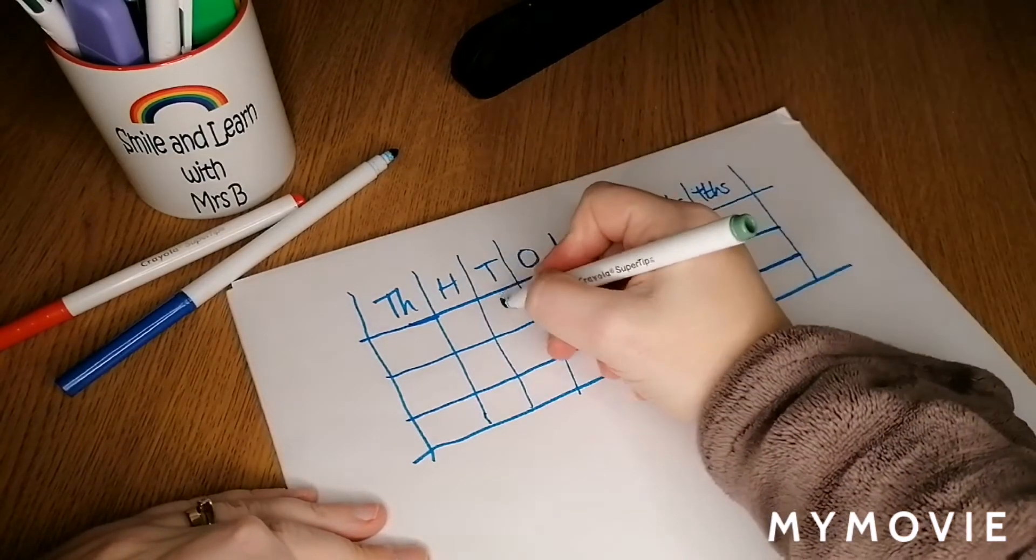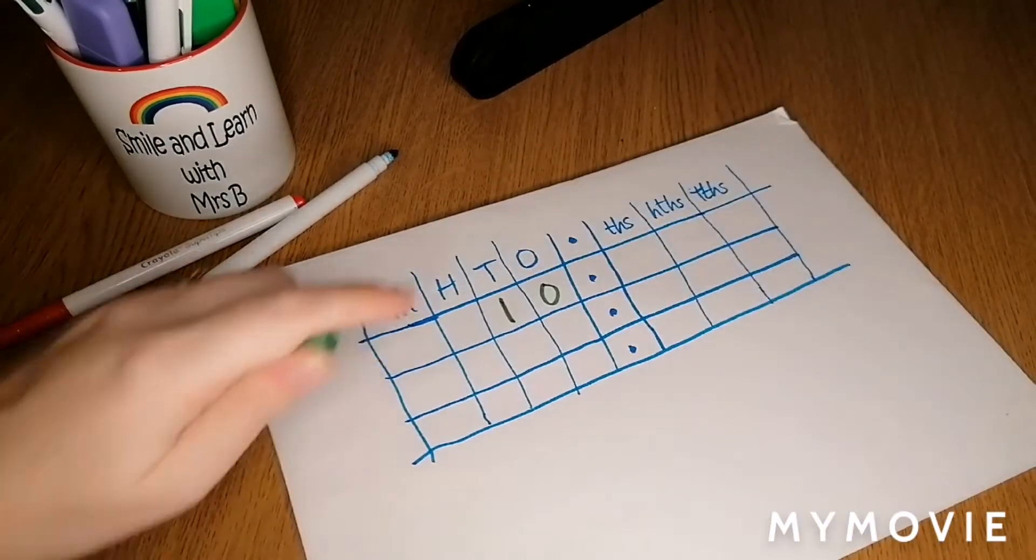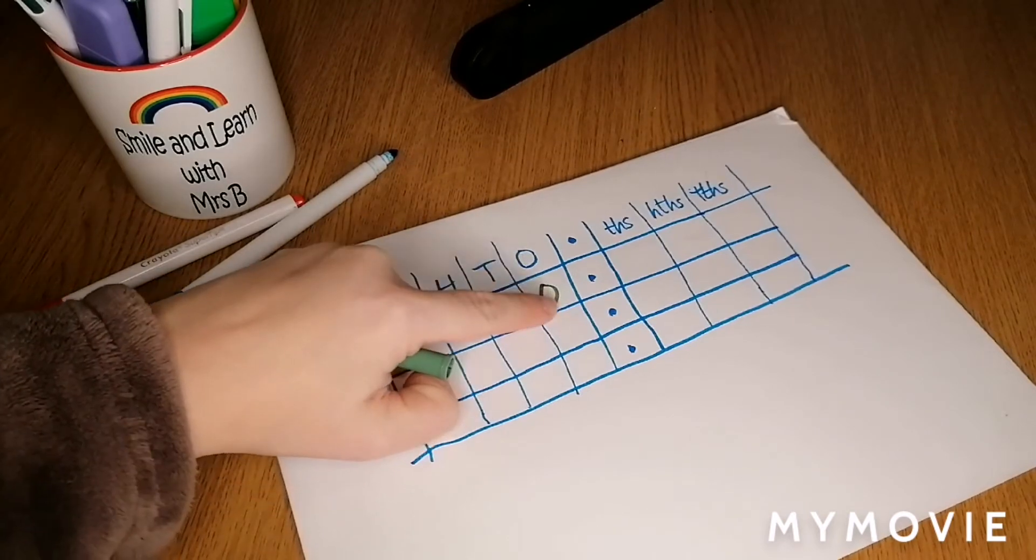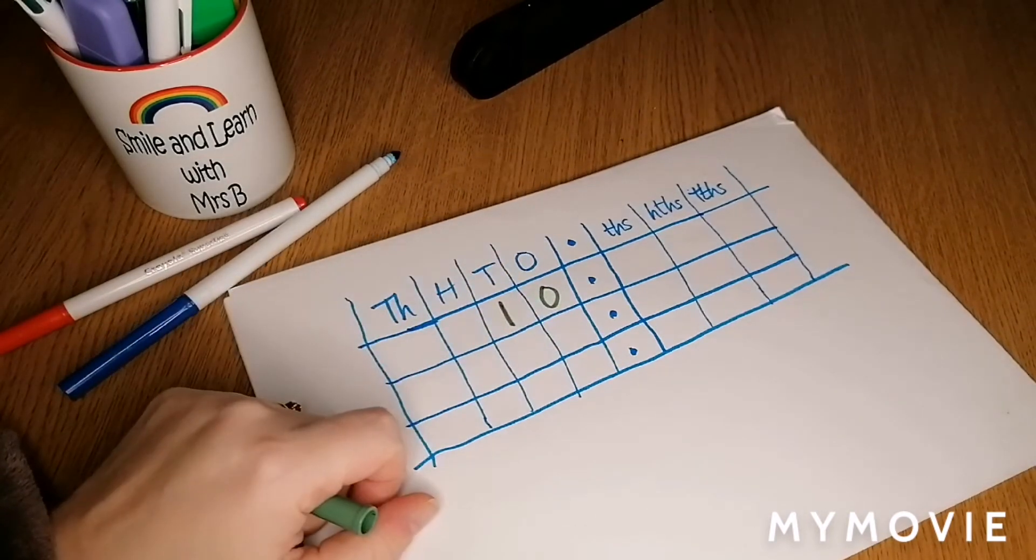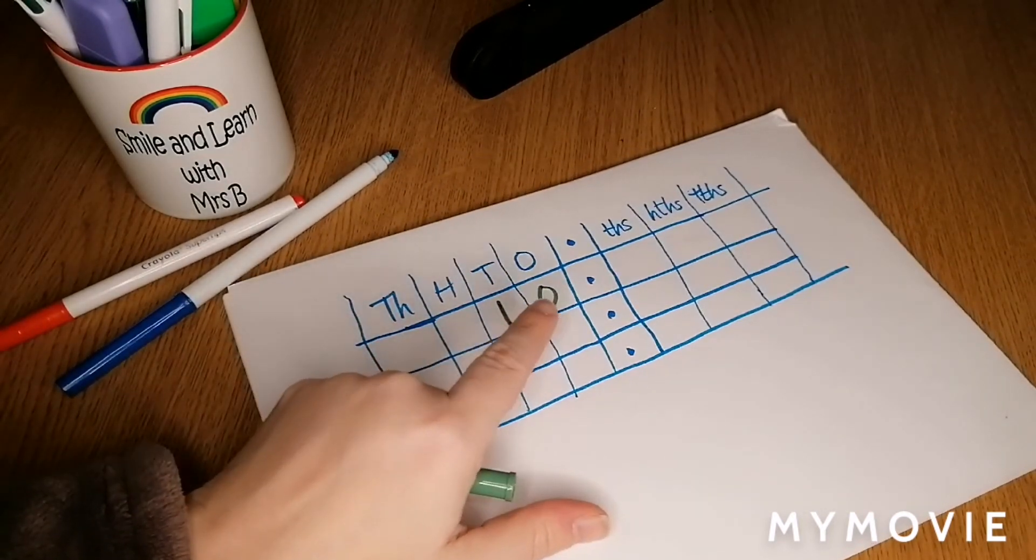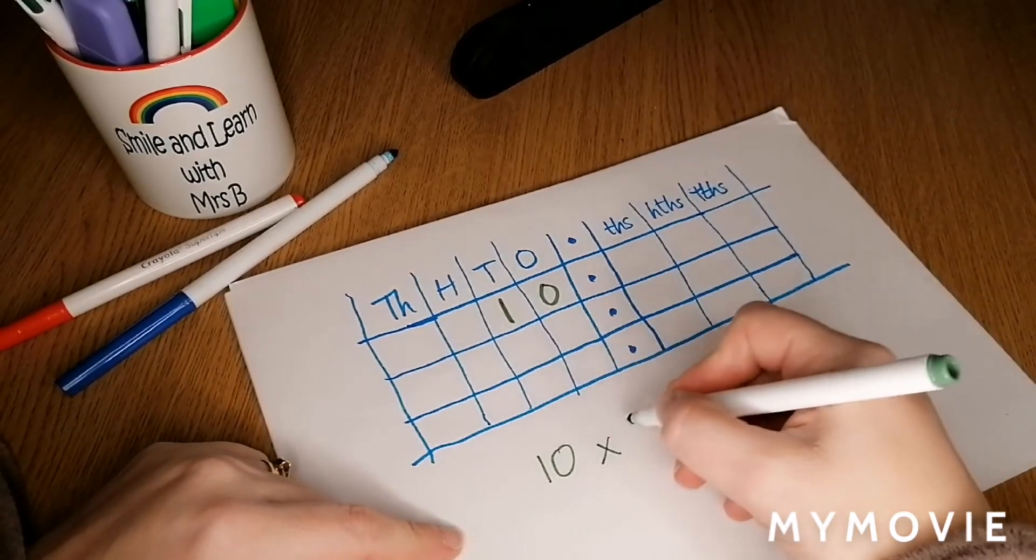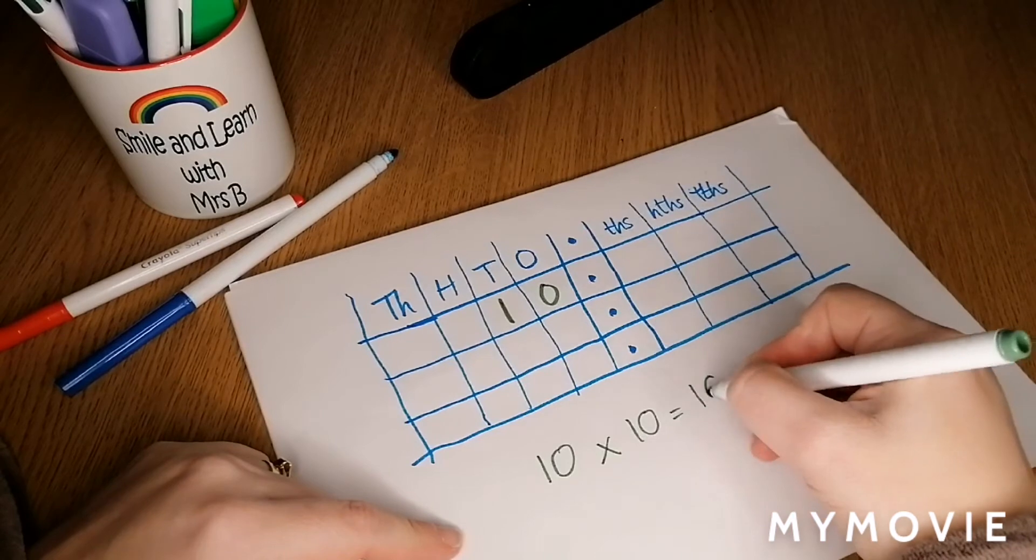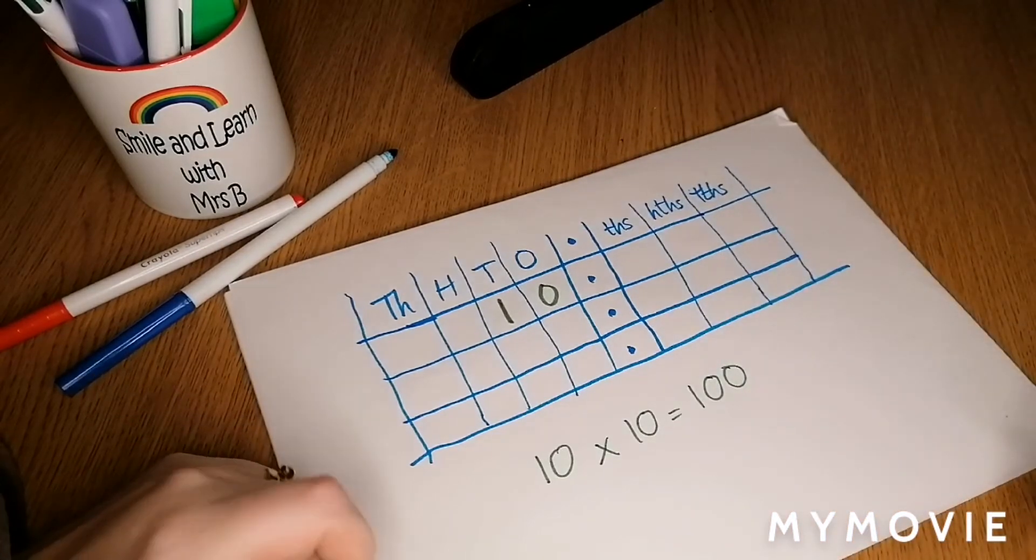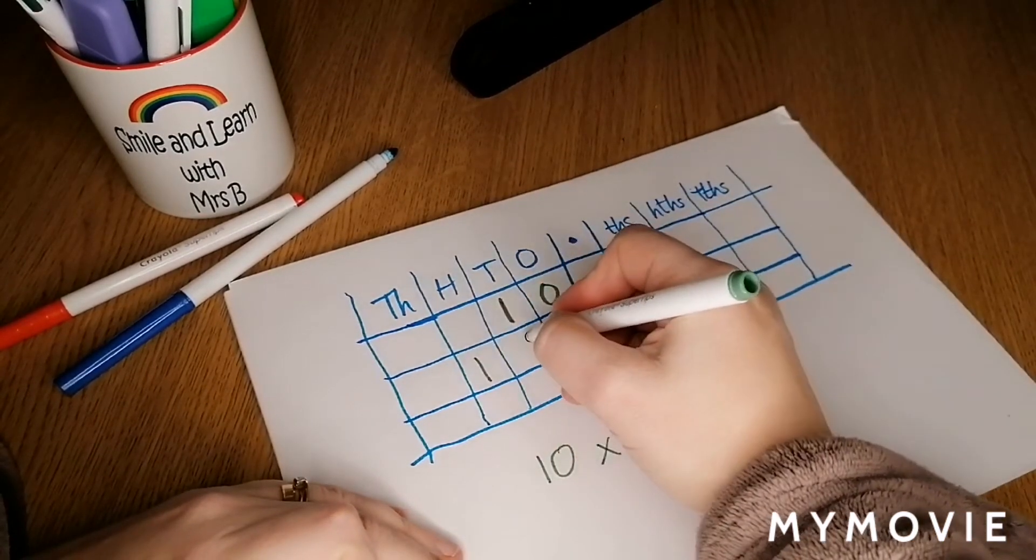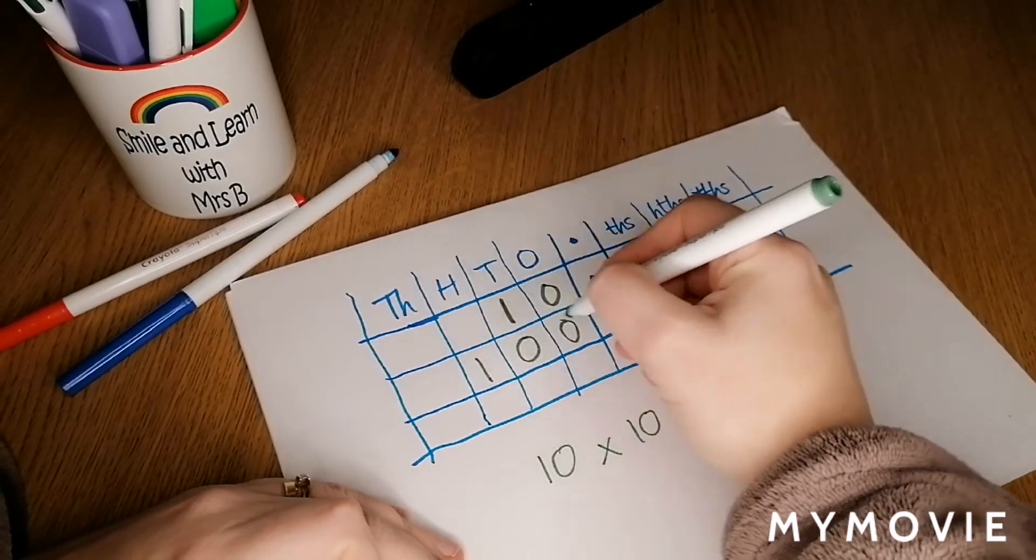We're going to have the number 10: one and a zero, one ten, no ones in 10. If we multiply 10 by 10—10 times 10—most of us know that's 100. If we write the number 100 here: 100, no tens, no ones.